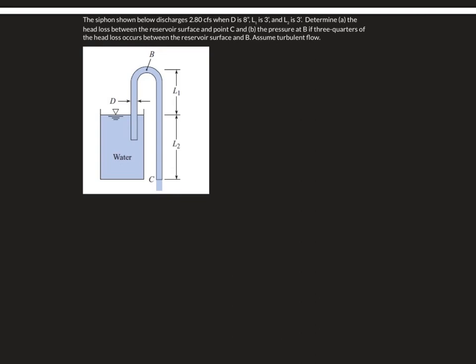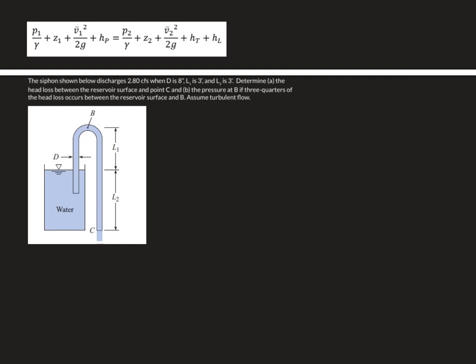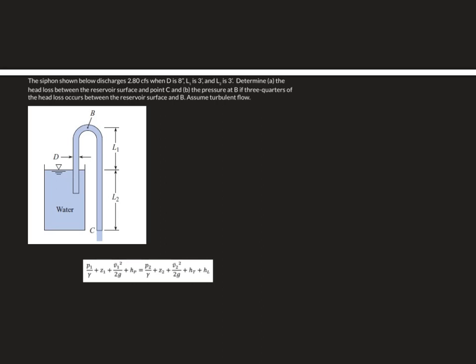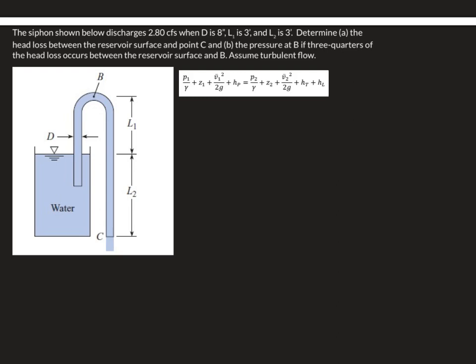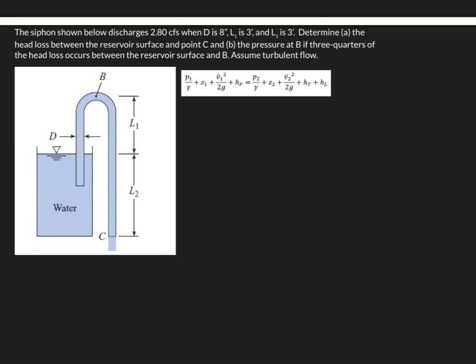Moving to the next problem. The siphon shown below discharges 2.80 CFS when D is eight inches, L₁ is three feet and L₂ is three feet. Determine (A) the head loss between the reservoir surface and point C, and (B) the pressure at B if three-quarters of the head loss occurs between the reservoir surface and B. Assume turbulent flow.